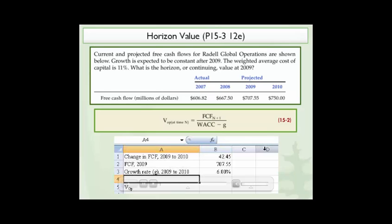I see we have an extra zero here. Let me get that off. Alright, then to determine the value of the operation or the horizon or continuing value, we use the Gordon Growth model that we see on the screen above.